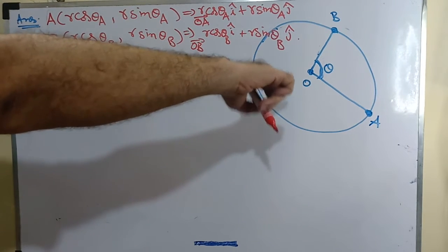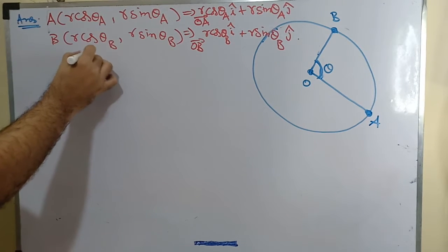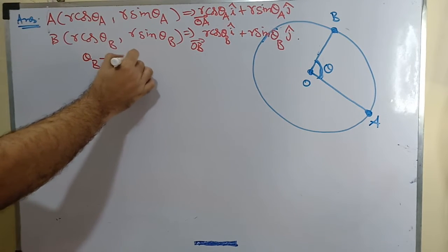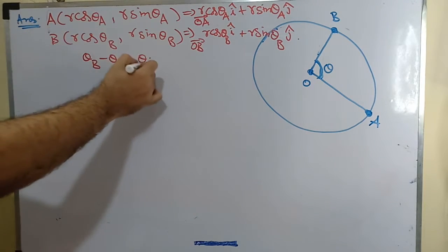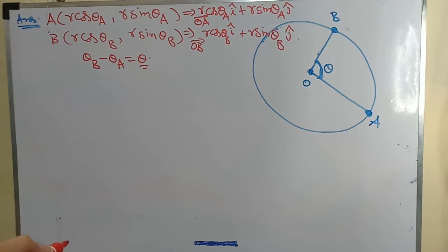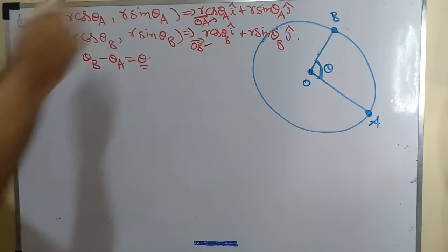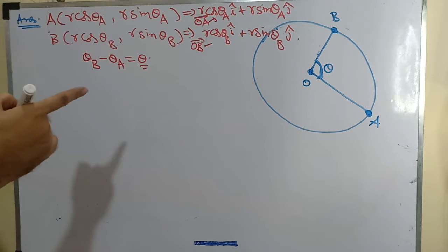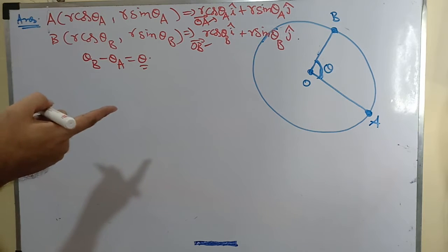The angle described by the arc AB is theta, which means theta_b minus theta_a equals theta — that is the difference of the angles for these two points. Now, we have the position vectors. If I differentiate these, what I get is the velocity at point A as well as the velocity at point B.